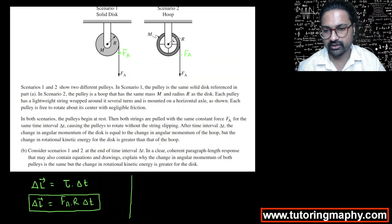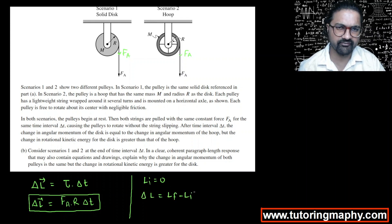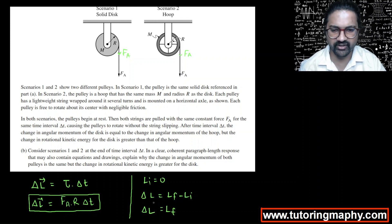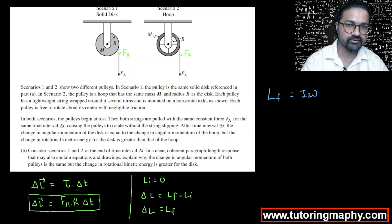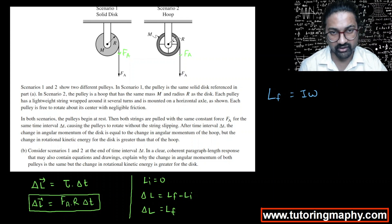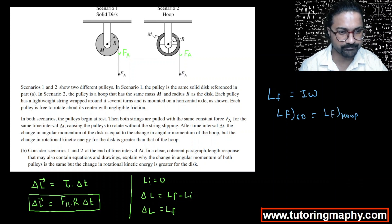Since both start from rest, the initial angular momentum L_i = 0, so ΔL = L_f − L_i = L_f. This means the final angular momentum of both objects is the same. Since angular momentum L = Iω, we can write I₁ω₁ = I₂ω₂ for the disk and hoop respectively.